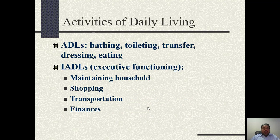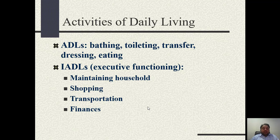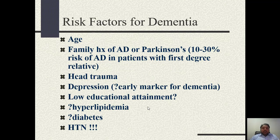What are the activities of daily living? When we label a patient as having dementia, we also write down whether the patient can perform his ADLs — activities of daily living — including bathing, toileting, transfer, dressing, and eating. Or IADLs, meaning instrumental activities of daily living, which are the executive functioning of a person: maintaining household, shopping, transportation, and maintaining finances.